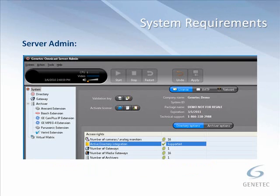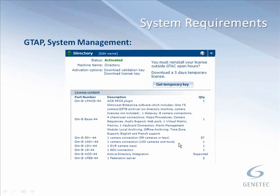Before getting started with configuration, there are a few things to check. Active Directory Integration is a licensable option, so open your server admin and look at your directory options under the license section. You should see Active Directory Integration listed as supported. You can also check in the Genetec Technical Assistance Portal (GTAP) under the system management section — look at your directory license and you should see a part number like OMEACD44, where the number is dependent on your version. In this case it's from version 4.4, and it shows Active Directory Integration as supported.